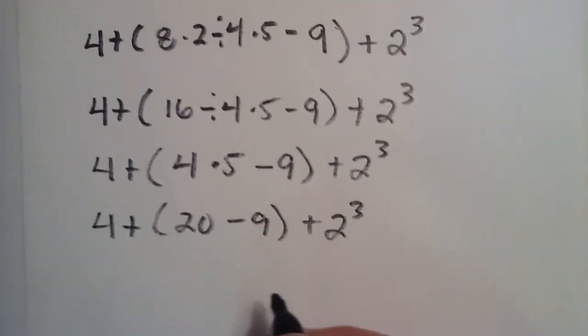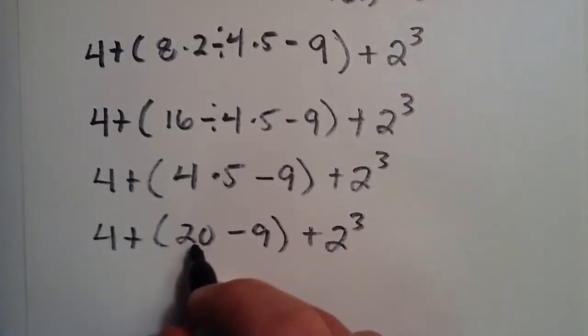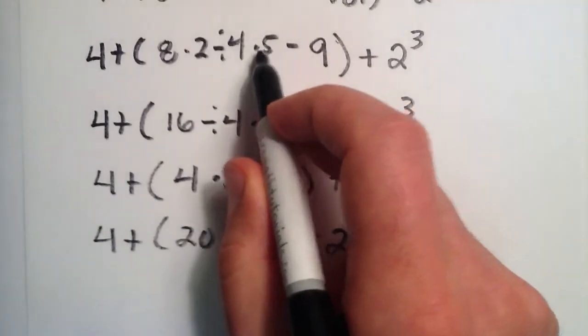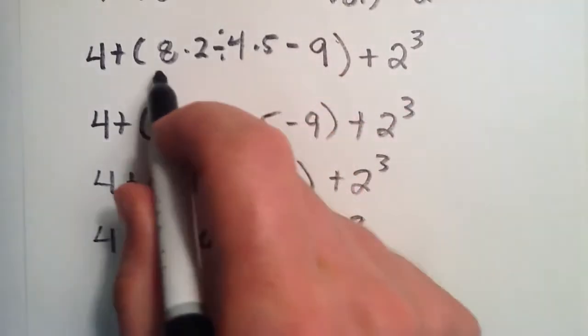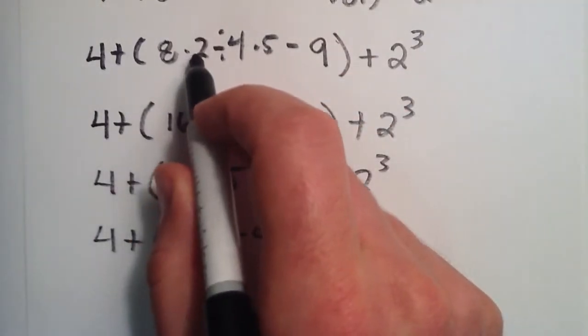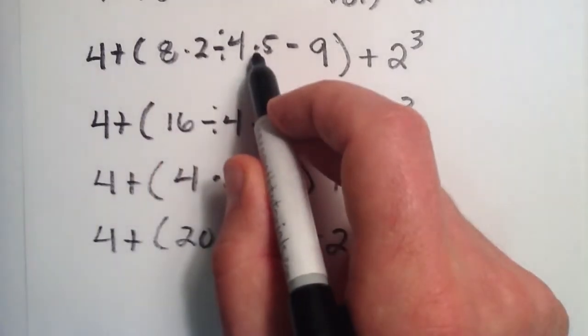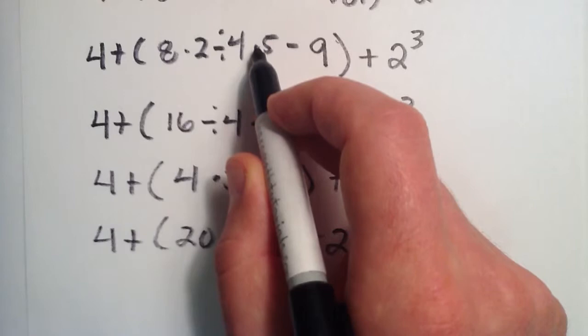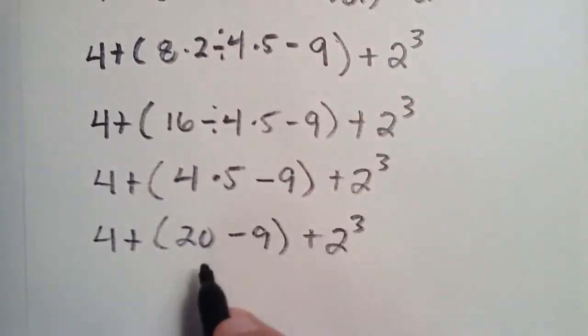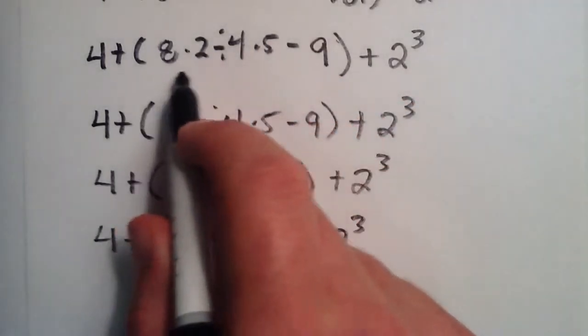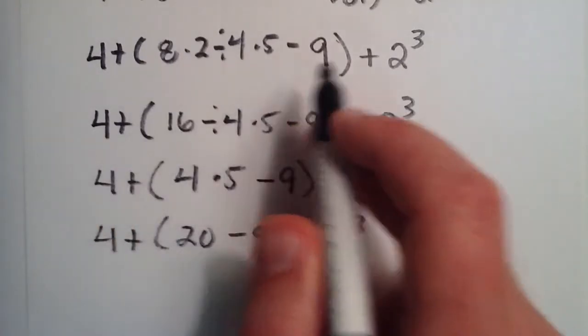Now notice here, the left to right was really important. If we had multiplied 4 times 5 first, that would have given us 20. And if we would have done 8 times 2 next, that would have given us 16. So then we would have had 16 divided by 20, which would reduce to be 4 fifths. And 4 fifths is not 20. So left to right is really important when there's an ambiguous situation like this.